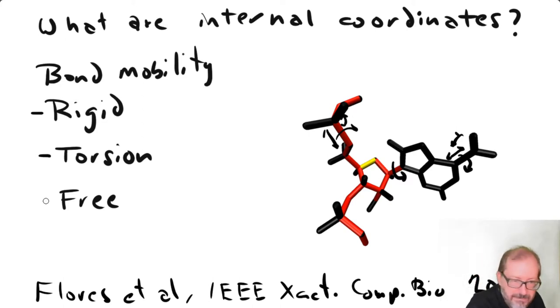And then lastly, there are these free mobilizers, and these do allow changes in bond length, bond angle, and torsion angle. And so that effectively gives you six degrees of freedom, because internal coordinate bodies know about their rotational orientation. So three translations, three rotations.